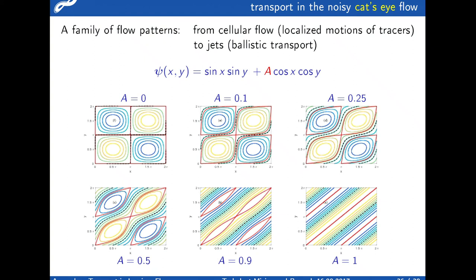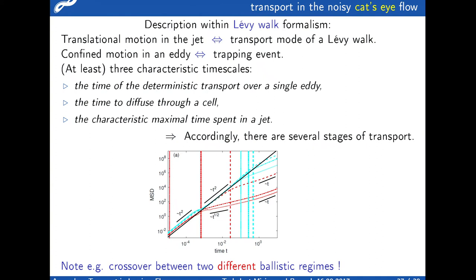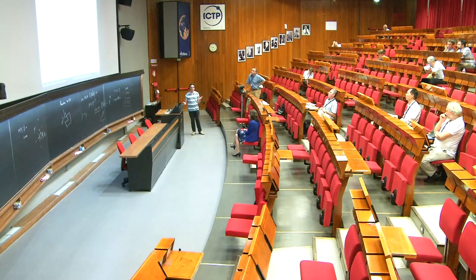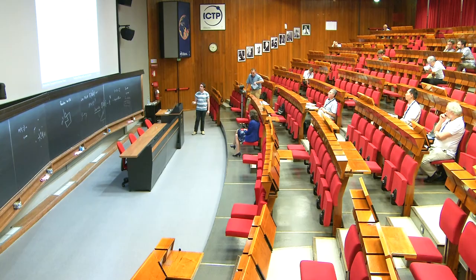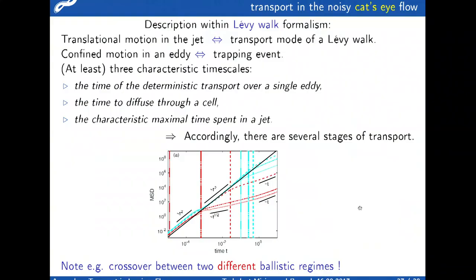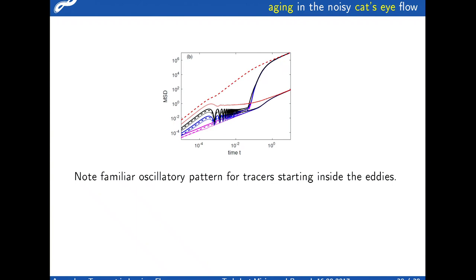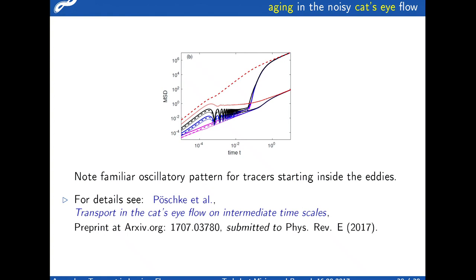We also made some computations for the noisy cat's eye flow. Cat's eyes means you have a parameter which helps you proceed from a cellular flow to jets. The jets correspond to the transport mode of a Levy walk, and the confined motion in an eddy is a trapping event. If you match all that, you obtain different transport regimes at intermediate timescales. You also observe interesting aging properties. All that can be found in our recent paper in Physical Review E and for the cat's eyes flow in our arXiv preprint.